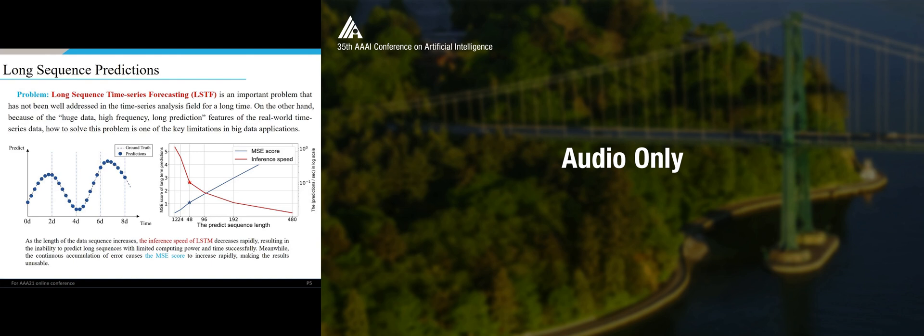The long sequence time series forecasting problem is an important problem and it has not been well addressed in the literature. Take the recurrent neural network as an example. In this figure, this is the result of the LSTM model. The red line is the inference speed where the prediction sequence from 12 to 480, the inference speed goes down very quickly, and the MSE score rises dramatically, which makes the model become unusable for this problem. So LSTM is no longer suitable for long sequence time series forecasting.